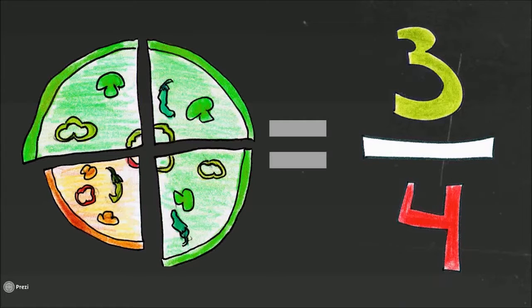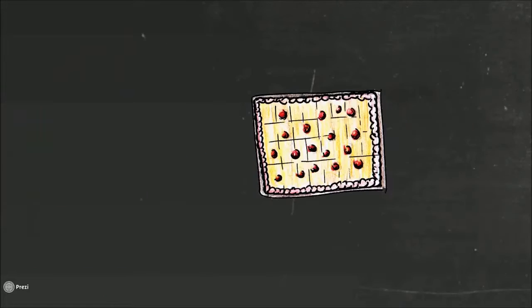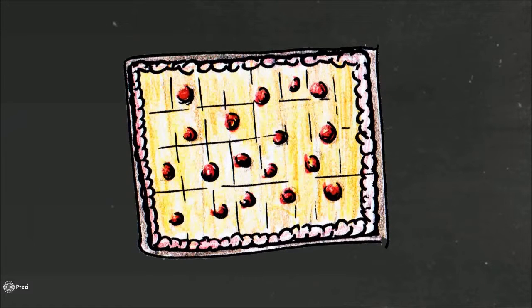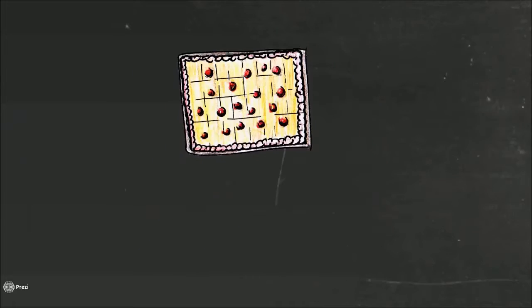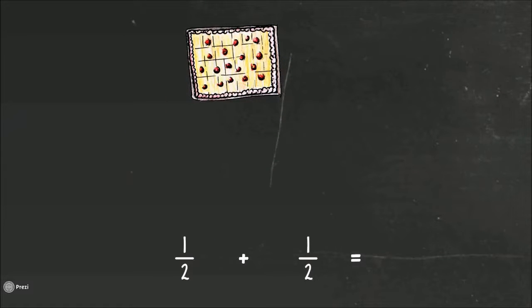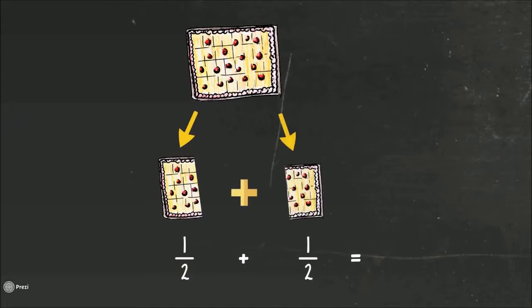You can divide an entity into any amount of pieces you like. Let's take a look at this delicious cherry pie. If we cut this pie right through the middle, we end up with two halves. One half on the left and one on the right. And put together, they amount to a whole again. You have to make sure that all pieces are of equal size.